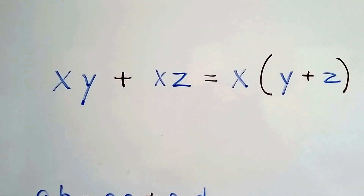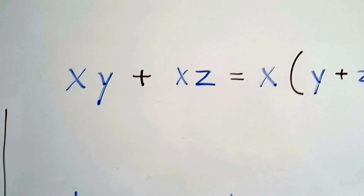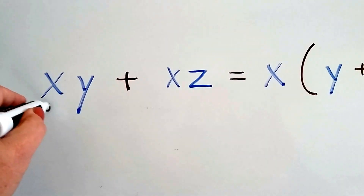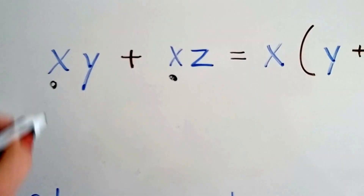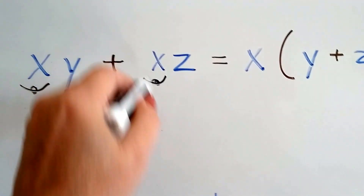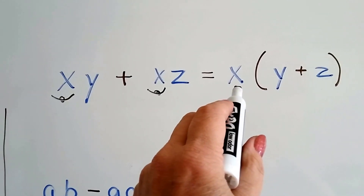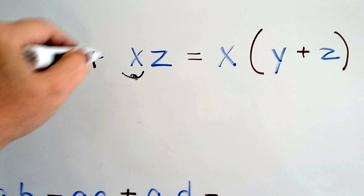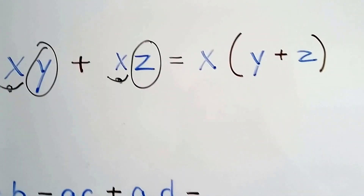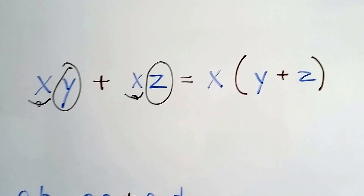Let's try this one. We've got xy plus xz, and we need to write it factored. We can see there's an x here and an x here. So we can use these two x's and put one on the outside of the parentheses. What's left over is this y plus this z. We put the y plus z inside the parentheses and now we've factored it.